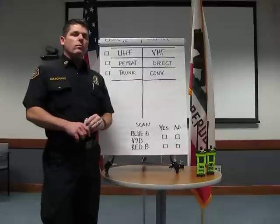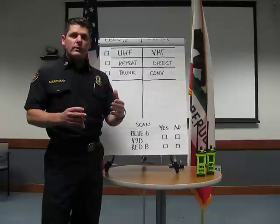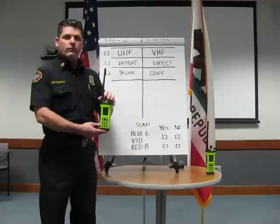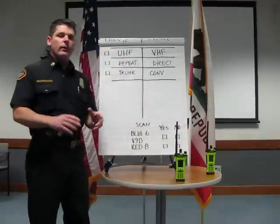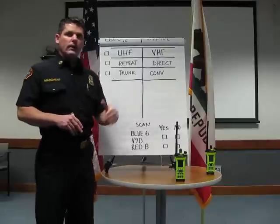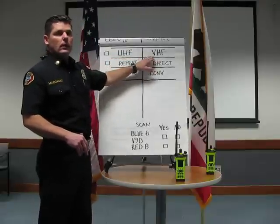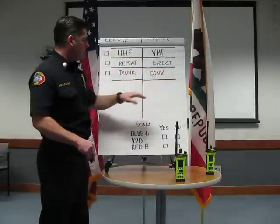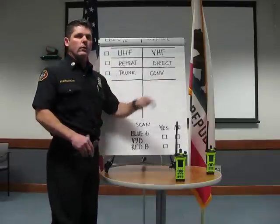Knowing the five frequencies we want to monitor as a rapid intervention company, and knowing we're going to split this over two devices, it's important that we recognize the two halves — the two sides — of our new APEX 7000. When we ask this question of the group, we get varied responses. We're going to work through our most common responses. The difference being: is it UHF versus VHF? Some responses are that it's repeat versus direct, and some believe it's trunked radio system versus a conventional radio system.